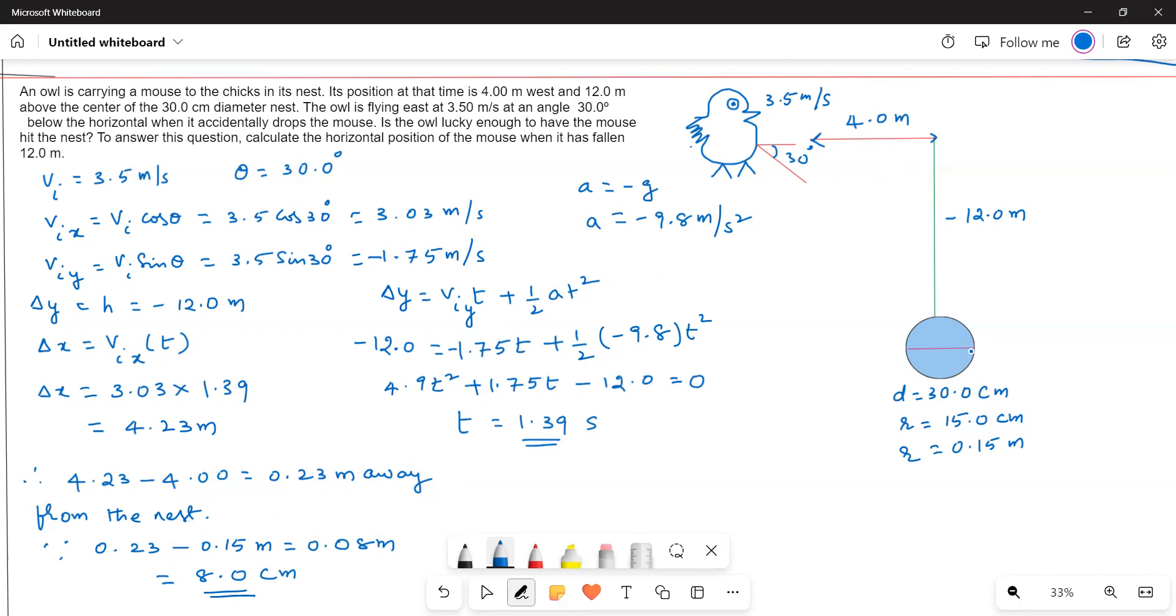The diameter of the nest is given as 30 centimeters. For the mouse to fall in the nest, it should fall within the radius. Calculating the radius from the diameter, we get 0.15 meters.